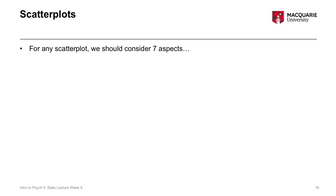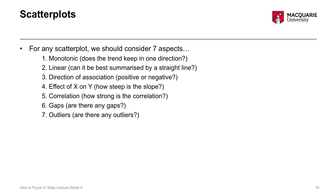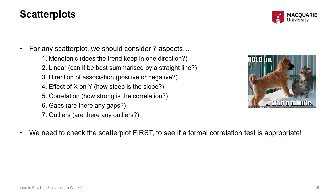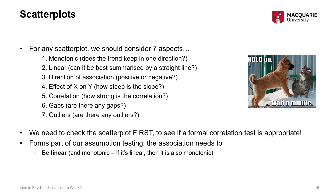Those seven aspects also give us a heads up about what kind of relationship exists. We'll go through them one by one. It's critical to check the scatterplot before running the correlation to confirm it's appropriate — a correlation requires a linear and monotonic association with no gaps or outliers, and you verify this by examining your scatterplot.